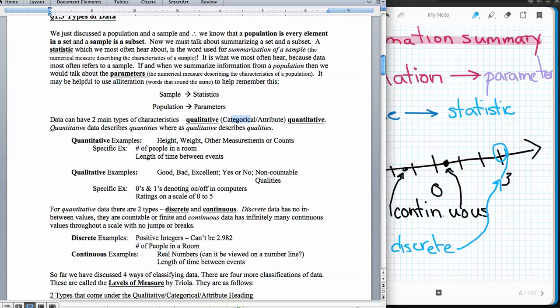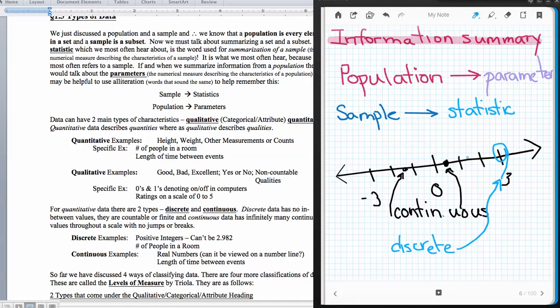A continuous example: these are real numbers like we view on the number line. It's the length of time between events, because this event could occur here and this one could occur right here. The length of time between here is a continuous amount of time. Whereas when we have the people, there's either the 1 here, or 2 here, or 3 here.